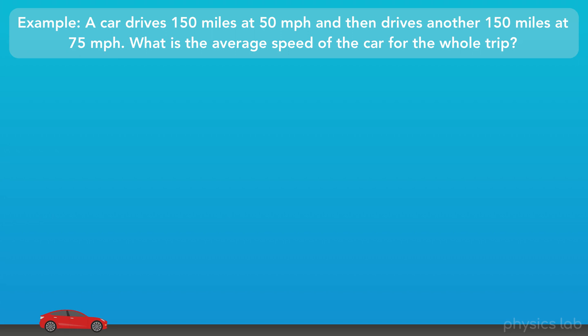What are the important pieces of information in this word problem? We're given some numbers. The car drives 150 miles at 50 miles per hour and 150 miles at 75 miles per hour. And we're being asked to find the average speed.